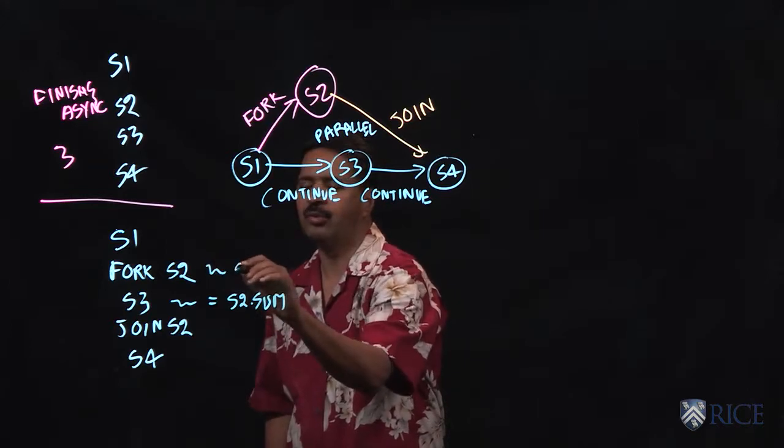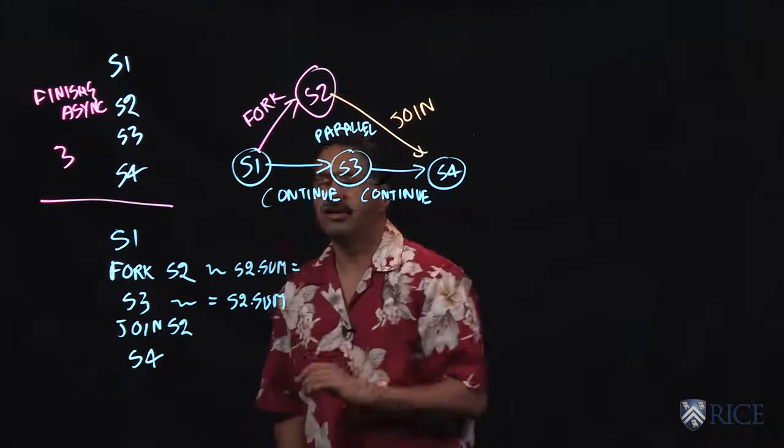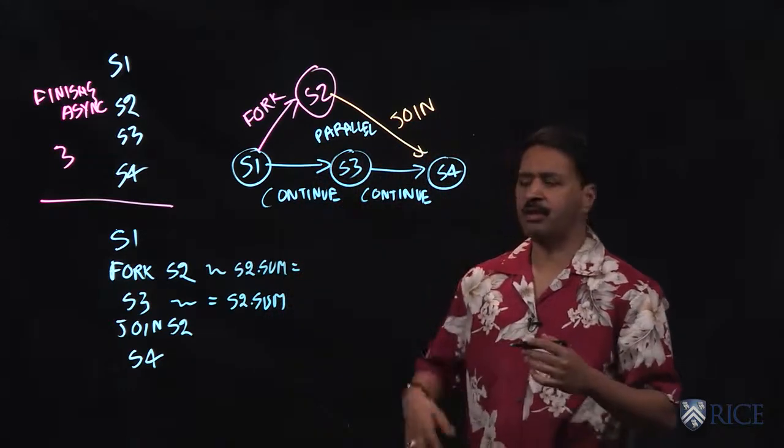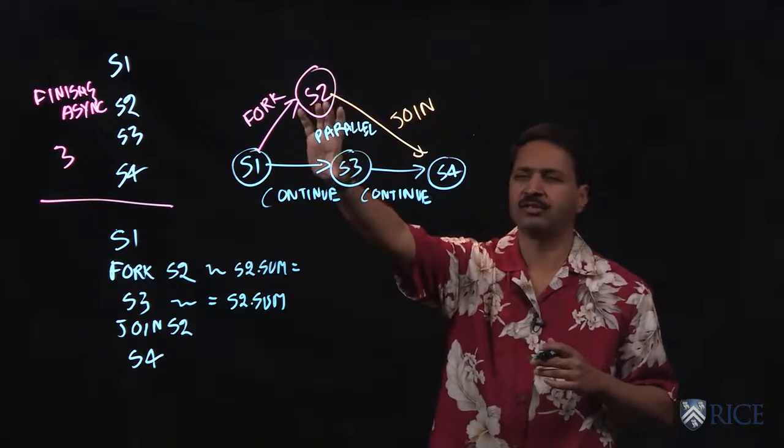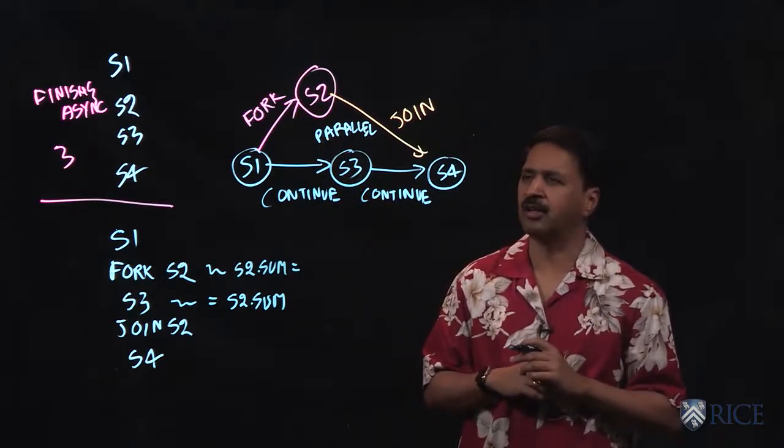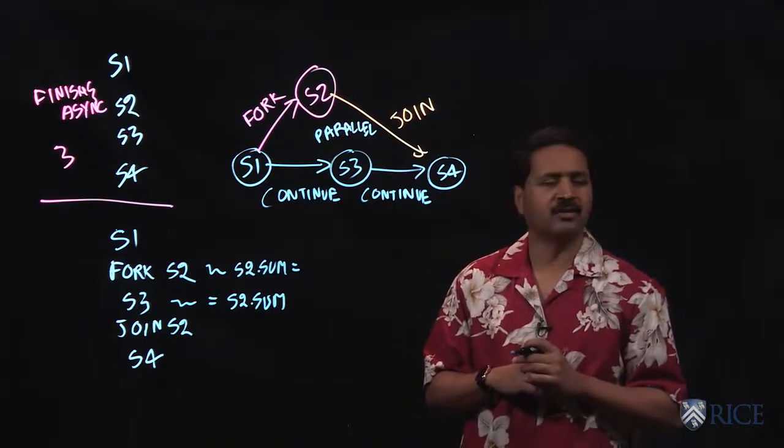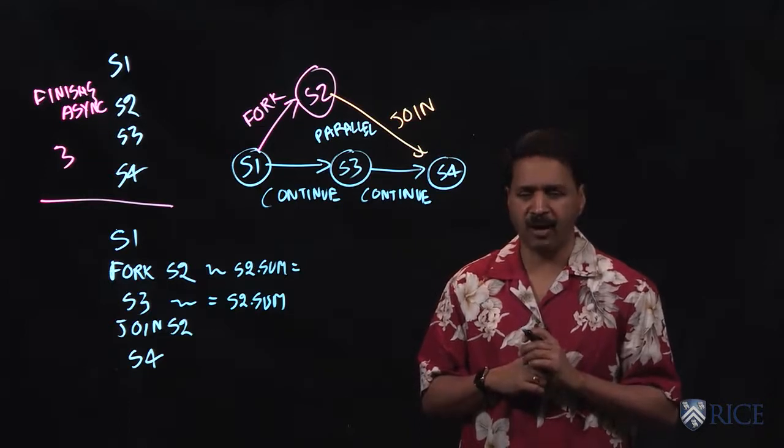And in s2 we were starting to write to that field sum, then we would have an error because the read and write could go in parallel with s2 and s3 not being connected with each other in the computation graph. There's no path of edges between them. That's a very pernicious kind of bug in parallel programming.